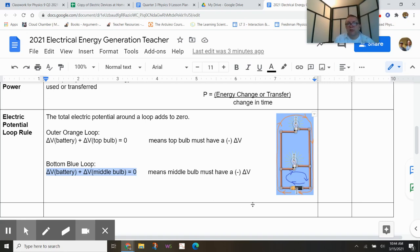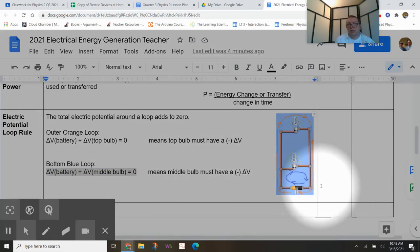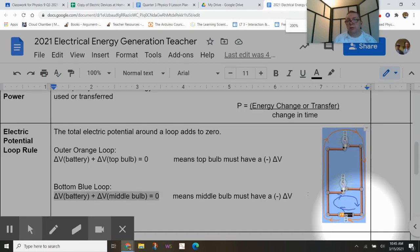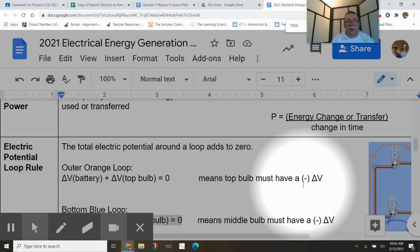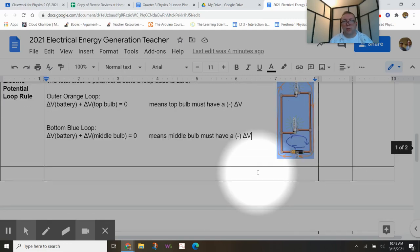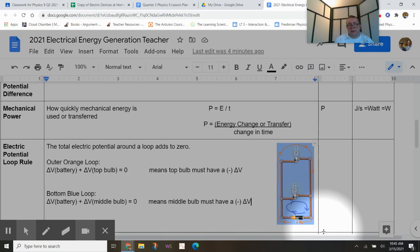So if we follow a charge that starts in the bottom right corner down here, that charge then goes through the battery gains potential goes through the wires. The wires have no effect. And then if we say this one charge in particular, then goes to the right, as that one charge goes to the right, it loses energy going through the bulb and then goes back to the battery and starts that process all over.